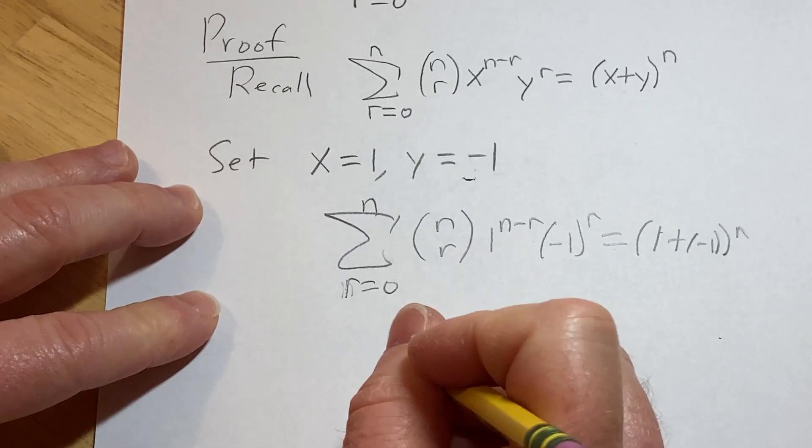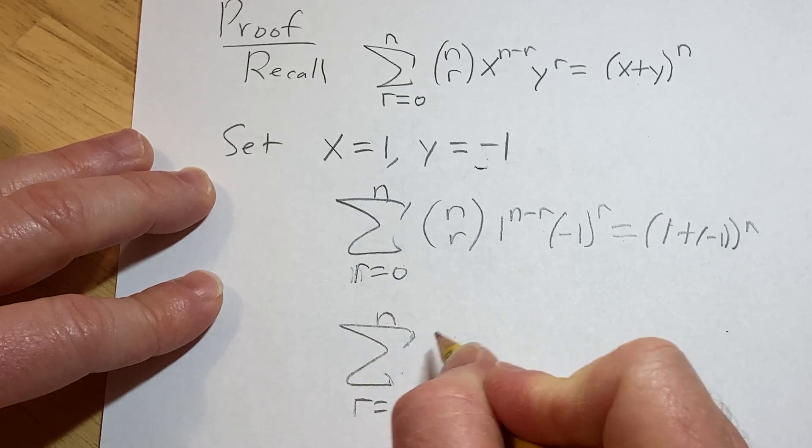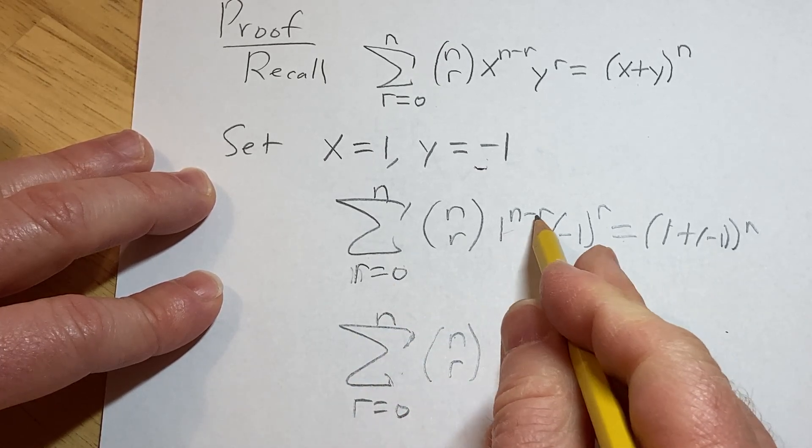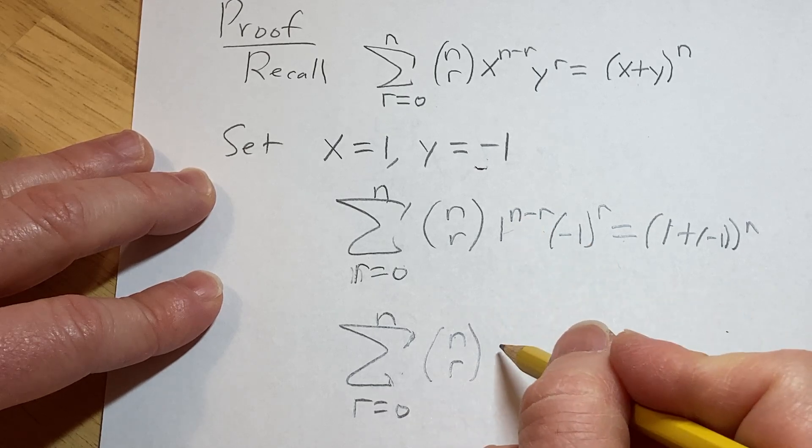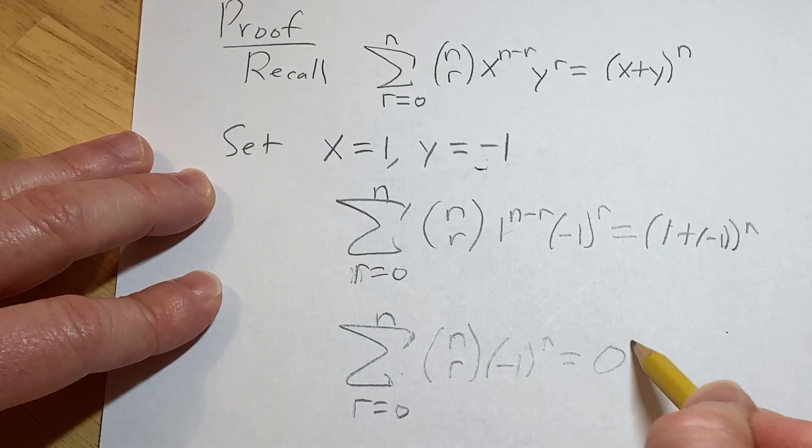And let's keep simplifying, this is the finite sum, as r runs from 0 to n, n choose r. So 1 to any power is 1, so we're just going to get a negative 1 to the r here, and this is going to be 0 to the n.